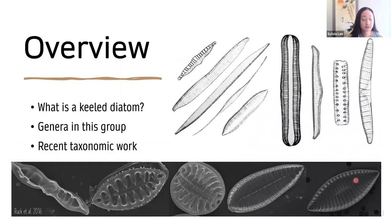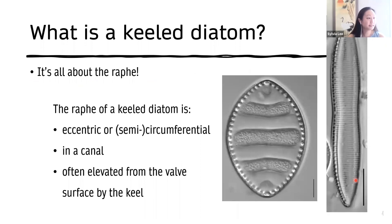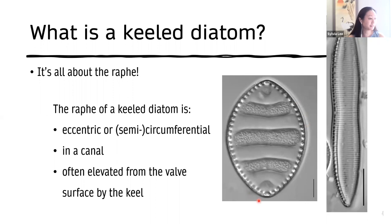Here's an overview of my talk today. We'll go over the characteristics that make a keeled diatom, talk about the many genera in this group in general, and then I will go over some recent taxonomic work that has contributed to our understanding of this broad group. So what is a keeled diatom? It's all about the raphe. The raphe of a keeled diatom is eccentric — meaning it's along the margin — or it is circumferential, going all the way around the valve margin, or semi-circumferential, meaning not quite all the way around.